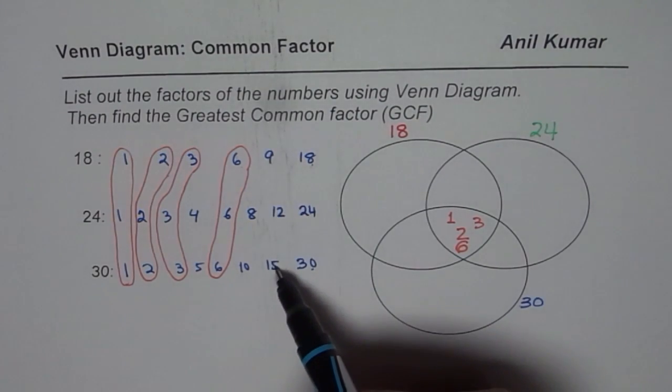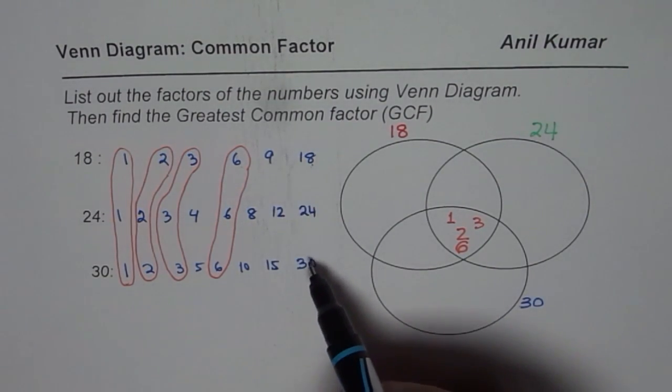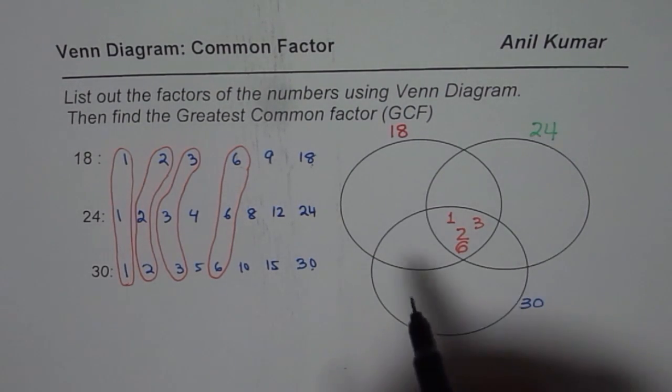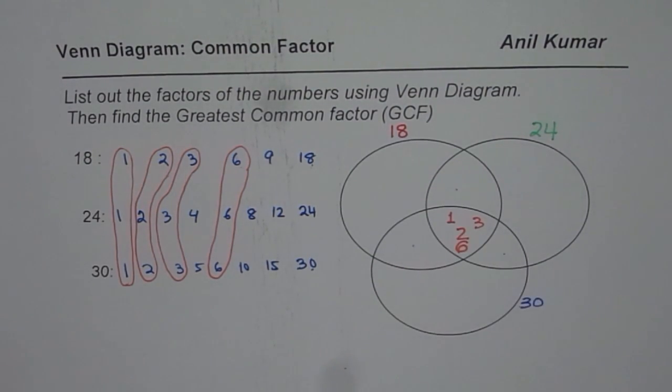Now how about 18 and 30? In 18 and 30 also we do not find any other common factor. That means these portions will be blank for this particular example. So there are no other common factors.